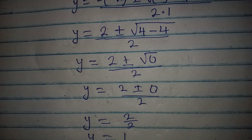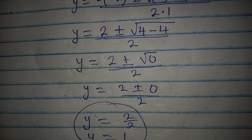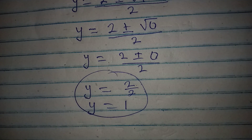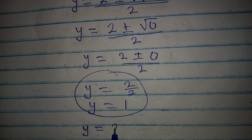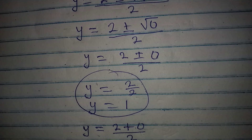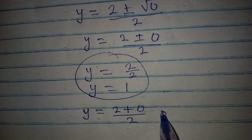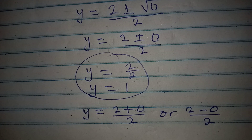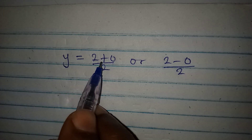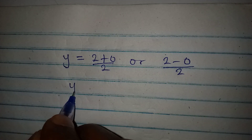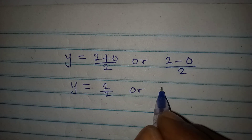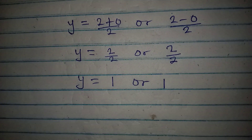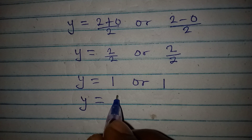Since this is a quadratic, we expect two solutions. We have y equal to 2 plus 0 over 2, or 2 minus 0 over 2 — both give 2 over 2. So y equals 1 or 1. In other words, y equals 1 twice, a repeated root.